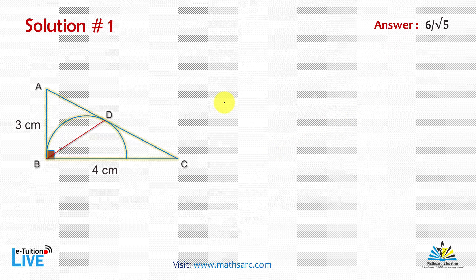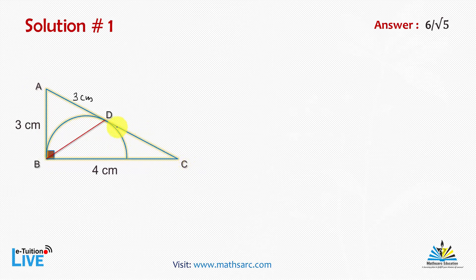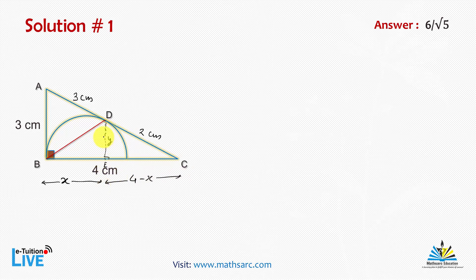We have two solutions for this question. In the first solution we are doing very basic things. Since AB is 3 cm, AD is also 3 cm — AD and AB are tangents drawn from point A, so AD and AB must be equal. By the Pythagorean triplet, AC must be 5 cm. Since AD is 3 cm, DC becomes 2 cm. Now draw an altitude from D to side BC; call this length Y, the foot E, and BE equal to X. Then EC must be 4 minus X.